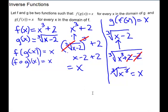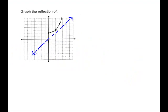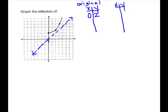Don't worry — you're not going to have to prove that these are inverses. You are just going to find the inverse of a function, but I wanted you to see it once. Let's look at some problems. First, they ask us to graph the reflection of this graph across the line y equals x. So we'll write our ordered pairs of this original picture: we have (0, 2), we have (2, 3), and we have (3, 5). And we're going to switch these — switch the x's and y's.